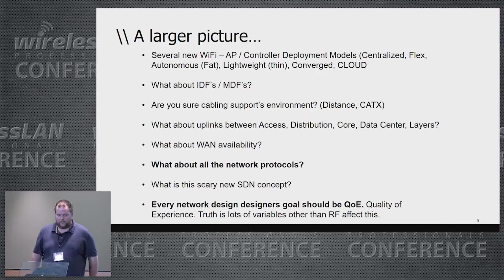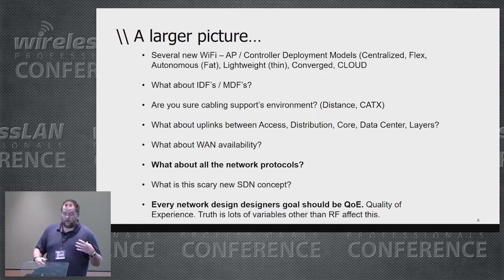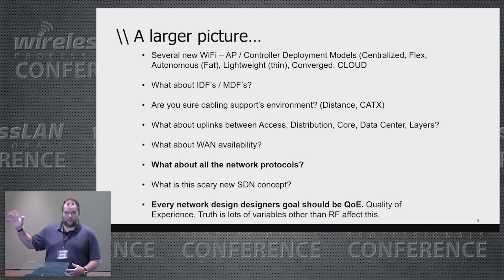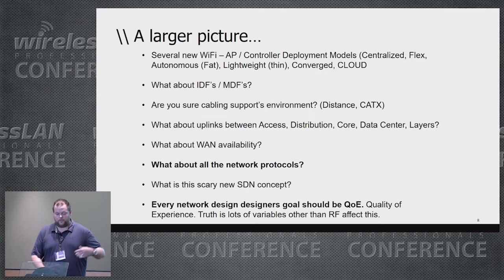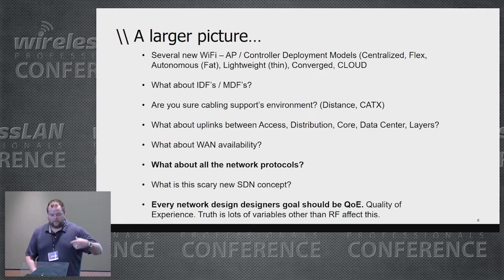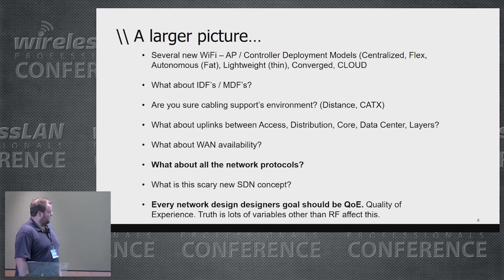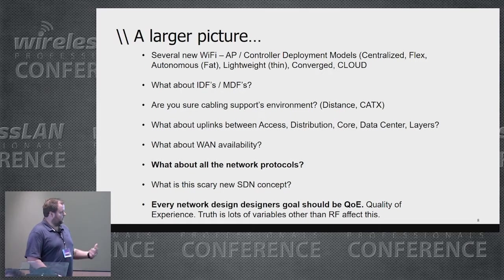Looking at a larger picture, you have several new different types of controller deployments and controller designs. For example, Cisco has one architecture called Unified Access with five different deployment models under it. You could be deploying APs for centralized, FlexConnect, autonomous, lightweight, centralized converged, or cloud. But what about your IDFs and MDFs? Where's your cabling going? Are you sure that cabling supports that particular environment with the correct distance and category?